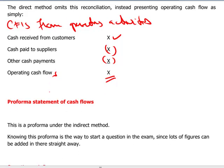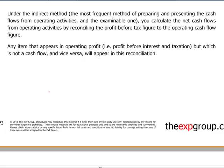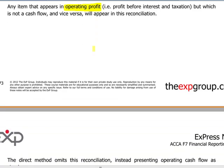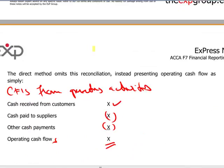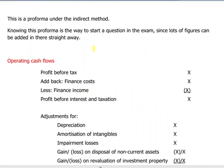For the indirect method, we present the operating cash flow by starting with the operating profit and reconciling everything down to the cash movements. Every income, gain, and expense that has no associated cash movement will be disregarded. We start with profit before tax, add back the finance cost and finance income — because most likely these are charged on an accrual basis — and we are left with the profit before interest and tax.